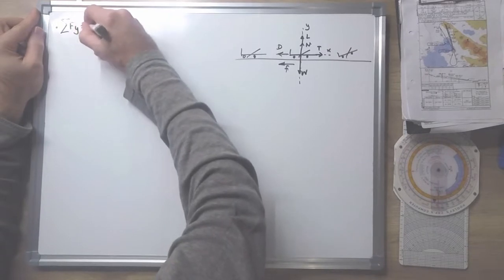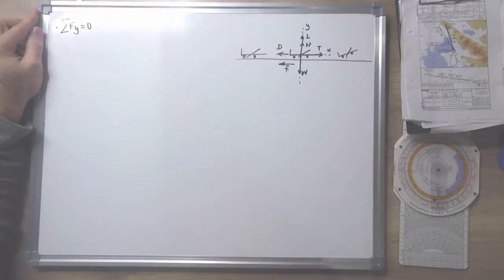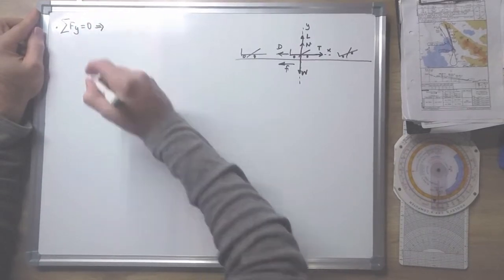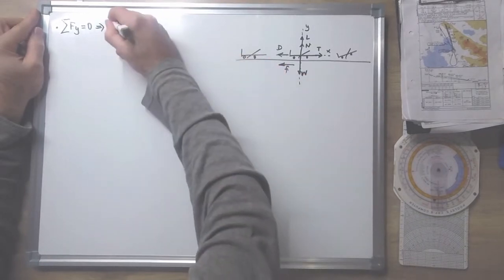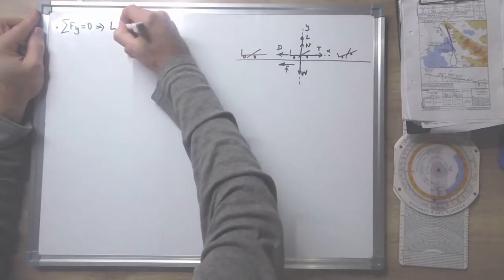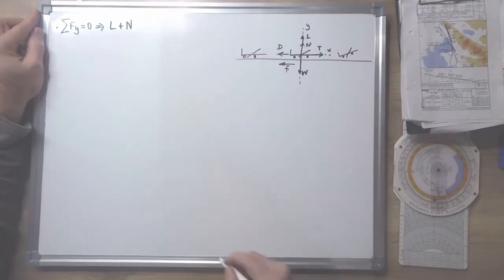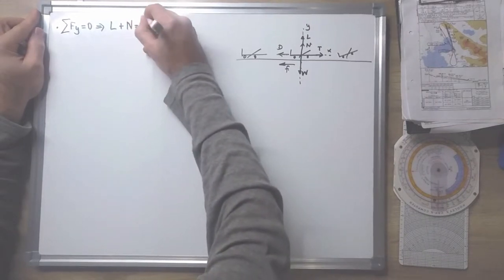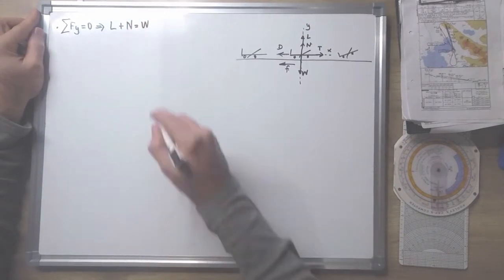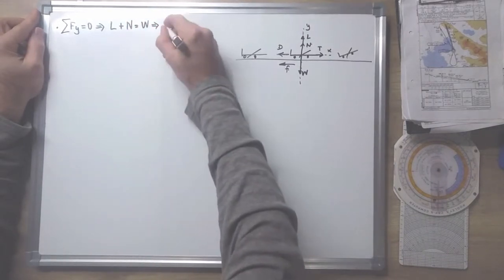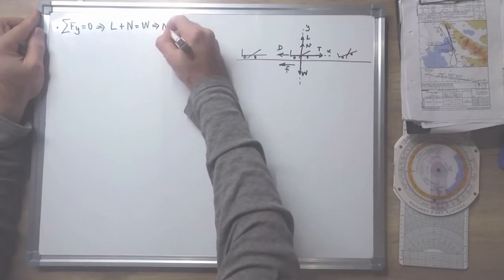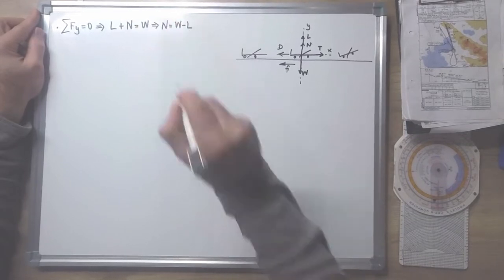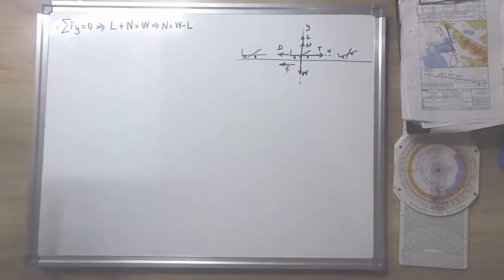On the vertical axis, where the aircraft is in equilibrium, we have lift plus the vertical reaction from the ground which equals the weight. So that vertical reaction is actually weight minus lift.